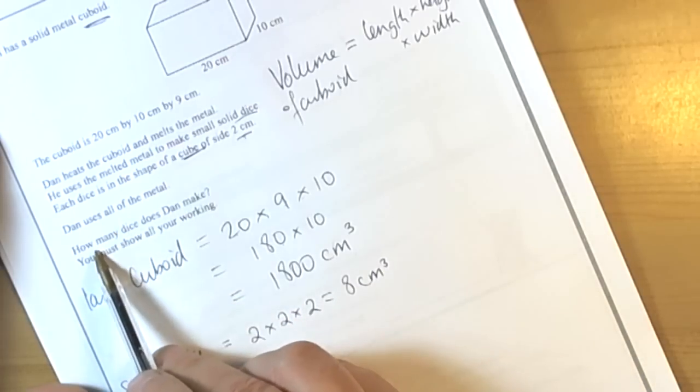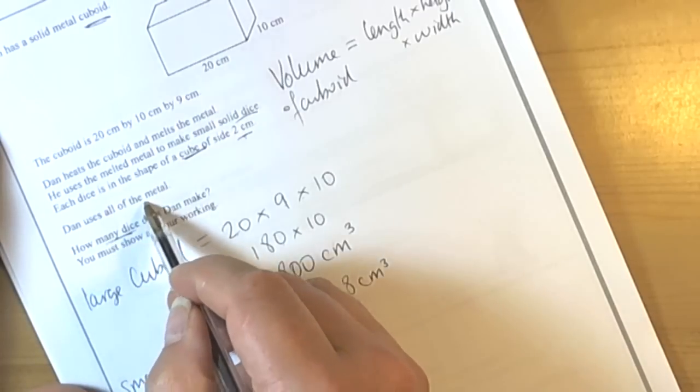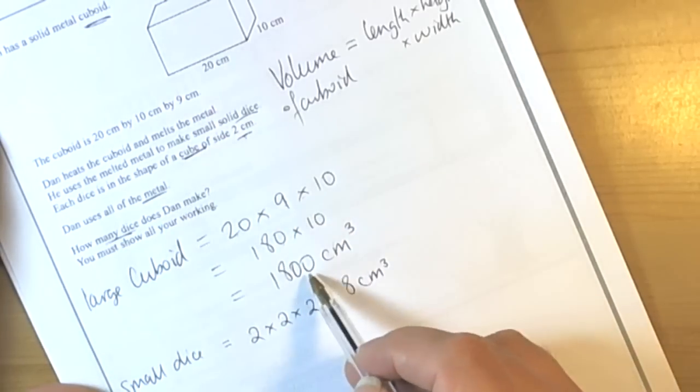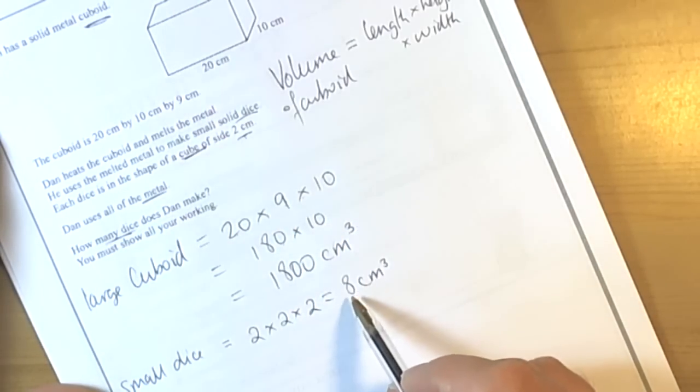It's asking us to make how many dice, and we're using all the metal. So we've melted down 1800 cm³, so we need to know how many 8 cm³ we can get in there, so we're going to do 1800 divided by 8.